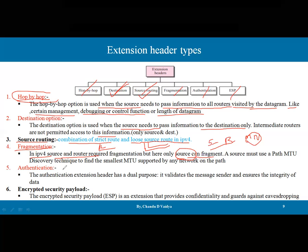Authentication extension header has a dual purpose: first, to validate the message sender, and second, to ensure the integrity of data — checking whether data has been tampered with. A separate protocol is available for this. As mentioned in lecture one of this chapter, IPsec security features are added here. Though originally optional, nowadays every application wants security, so it has become effectively mandatory. The last extension header is Encrypted Security Payload (ESP), which provides confidentiality and guards against eavesdropping. Authentication provides integrity, but confidentiality is provided by encryption through ESP.